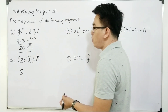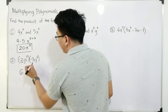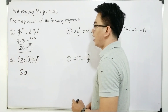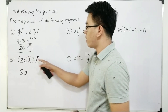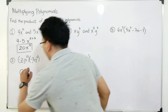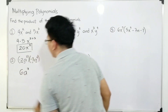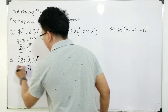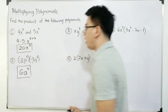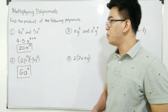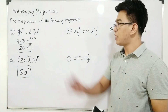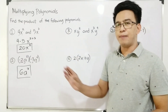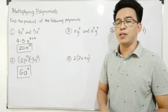Negative 2 times negative 3 — since they have the same sign — is equal to positive 6. And as for the exponent, copy your variable a and then add 3 and 4. Therefore, the product of these two monomials is equal to 6a raised to 7. I hope that from these first two examples, you've already gotten the concept of how to multiply polynomials.